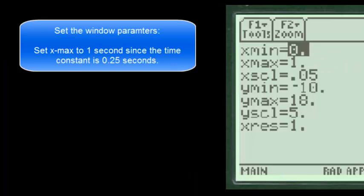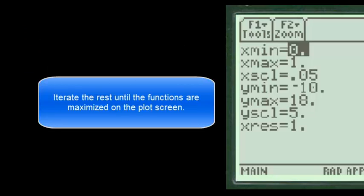Set the window parameters. Set X maximum to 1 second, since the time constant is a quarter of a second. Iterate the rest until the functions are maximized on the plot screen.